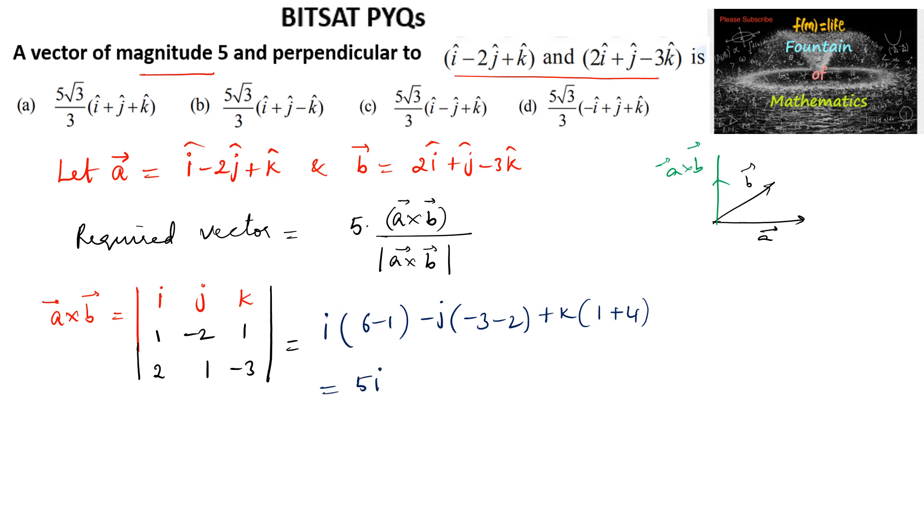Which is equal to 5i plus 5j and again 5k, that is 5 times i plus j plus k.